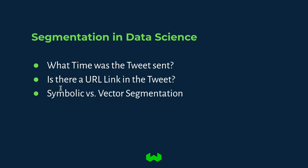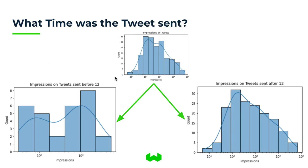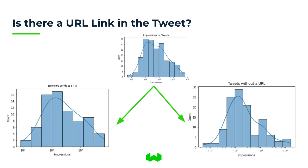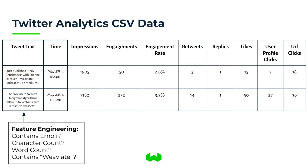That will be our transition from splitting on symbolic attributes to vector attributes extracted from deep learning models for segmentation. The first question I asked is: what time was the tweet sent? I can extract tweets sent before 12 and plot their impressions, then look at tweets sent after 12. One problem is there are many more tweets sent after 12 than before 12, making it difficult to automatically extract insight. Similarly, we can look at whether there is a URL link in the tweet and examine the distribution between these two values.